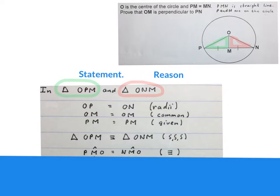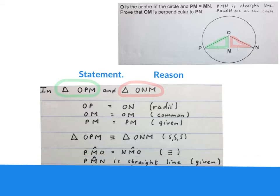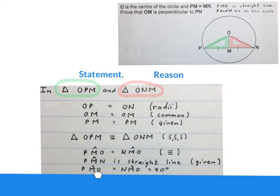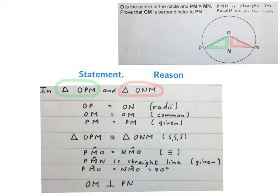Then we can write angle PMO is equal to angle NMO from congruency — so those two angles are equal. We can write angle PMN is a straight line, it was given. So angle PMO is equal to angle NMO is equal to 90 degrees. Therefore OM is perpendicular to PN. Please stop the video and get your brain around this rider.